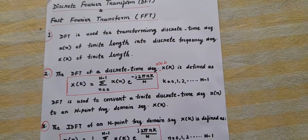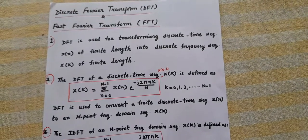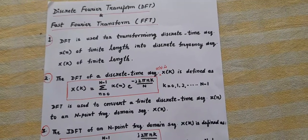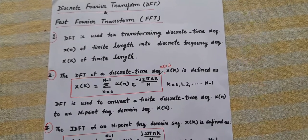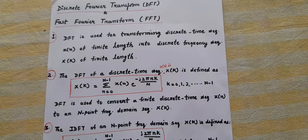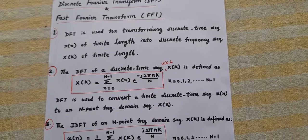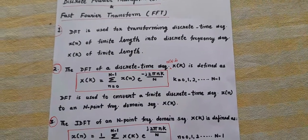What is DFT used for? DFT is a mathematical tool which is used for transforming a discrete time sequence x(n) of finite length into discrete frequency sequence x(k) of finite length.